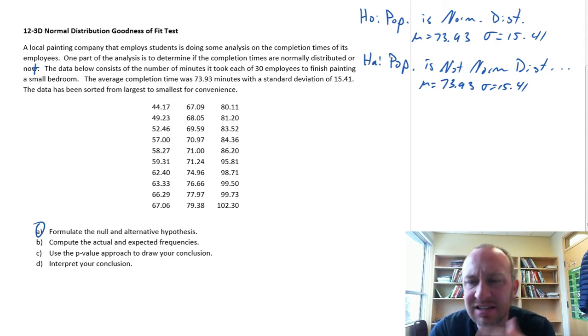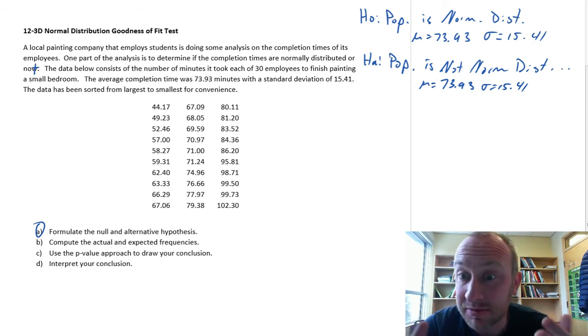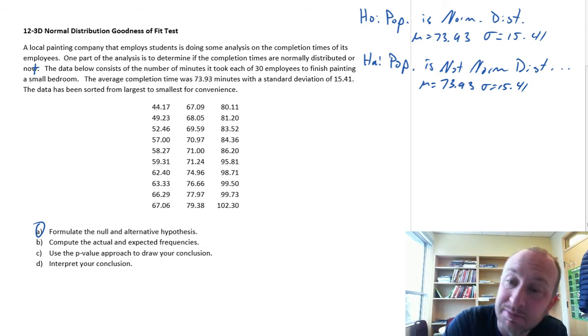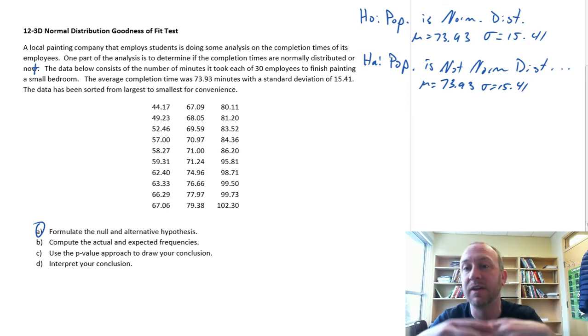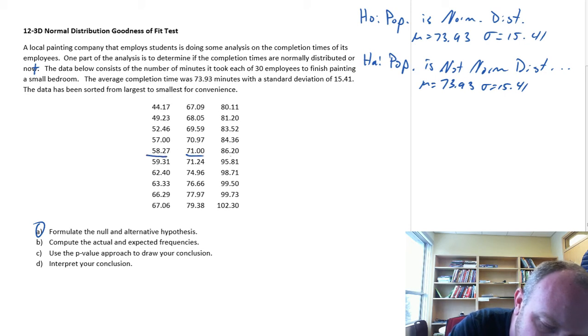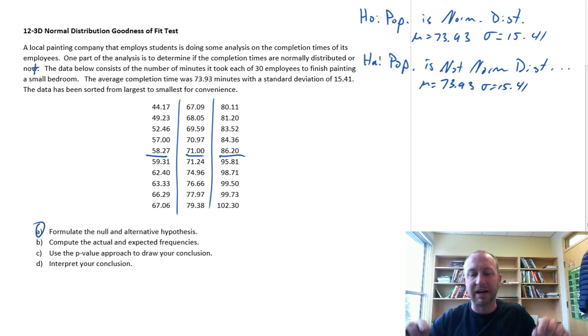Null hypothesis H0: Population is normally distributed, mu is 73.93, sigma is 15.41. Alternative hypothesis Ha: Population is not normally distributed, mu is 73.93, sigma is 15.41. So we've got our null and our alternative set up.